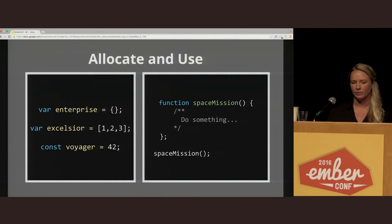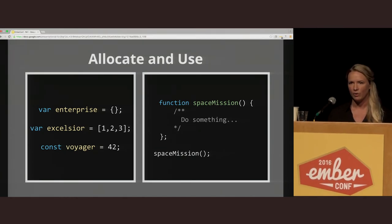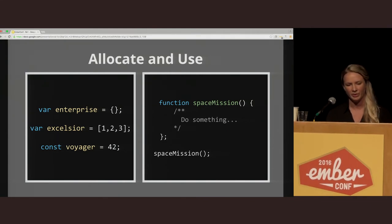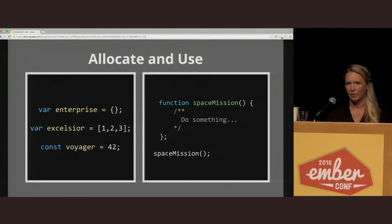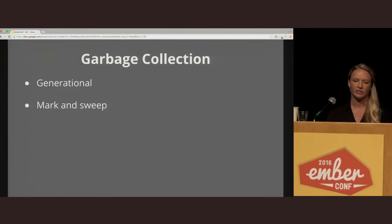Then you actually have to use the memory, which is basically just reading and writing. Both allocate and use are explicit in all languages. In JavaScript, when I say explicit, I mean that you actually have to create these variables — your code won't just know that you need a variable called Enterprise or that it's going to be a spaceship. And the third step, release, is the process of deallocating the memory when it's no longer needed. This step is also explicit in lower-level languages, but in JavaScript, this is where the garbage collector comes in.